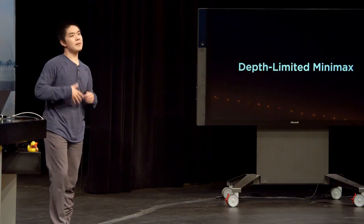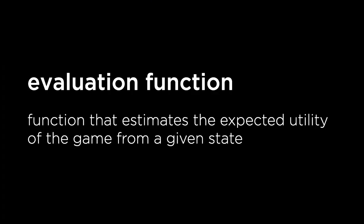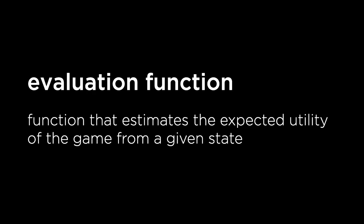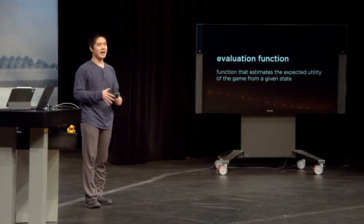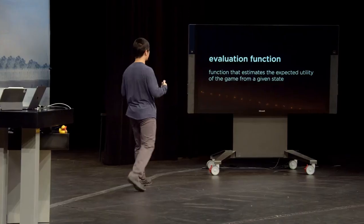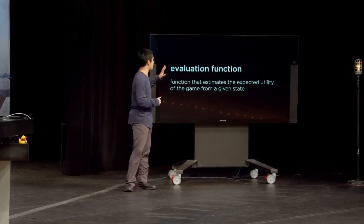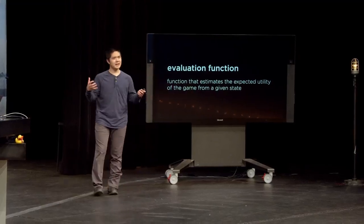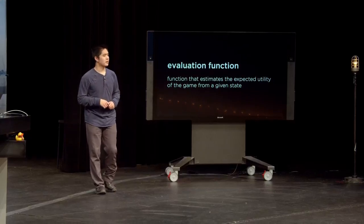There are many variants on the Minimax algorithm, one of the most common being depth-limited Minimax. In depth-limited Minimax, we consider what's called an evaluation function. Rather than follow the game until the very end, we follow the game some number of moves — in chess, maybe 15 or 16 moves, but not all the way to the end. Then we ask: at this point in the game, who seems likely to win? Even without calculating all the way, you can make some judgment by counting up how many pieces of what value each side has.